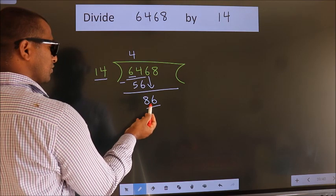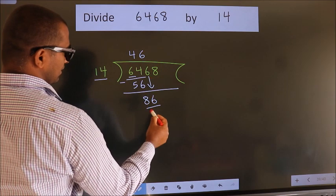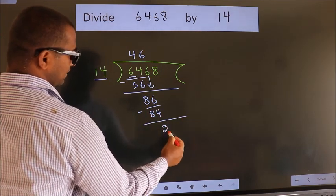A number close to 86 in the 14 table is 14 times 6, which is 84. Now we subtract and get 2.